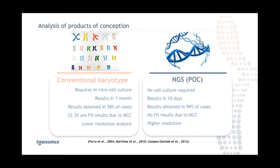Comparing molecular approach to conventional karyotype: conventional karyotype requires in vitro cell culture, while molecular approach requires no cell culture — you go directly to the sample, extract DNA, and analyze it. Conventional karyotype takes one month; molecular approach takes around one week to ten days. Conventional karyotype yields results in only 58% of cases, while the molecular approach gives results in 99% of cases. There are around 13–15% of cases with maternal cell contamination in the molecular approach, but using STRs (short tandem repeats) eliminates false negatives. Molecular approach also provides higher resolution analysis.